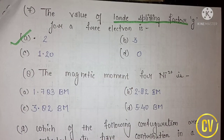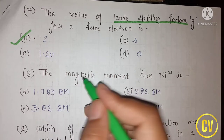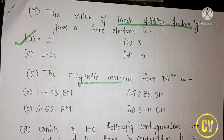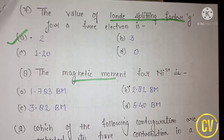Question number 8 asks: what is the magnetic moment for the Ni²⁺ ion? To find the magnetic moment, you need to know the formula, which is μ = √(n(n+2)) Bohr magnetons, where n is the number of unpaired electrons.